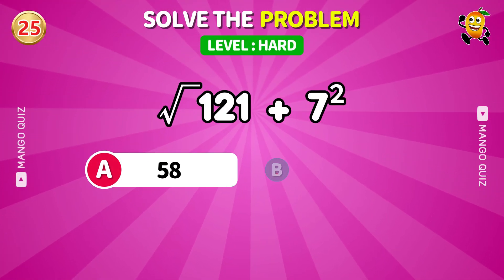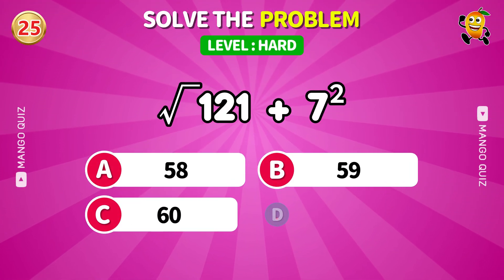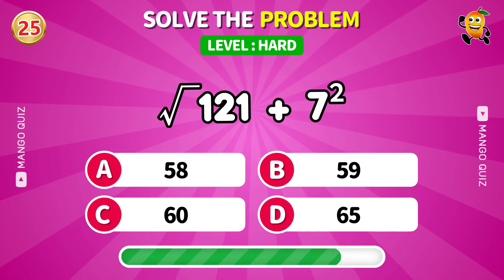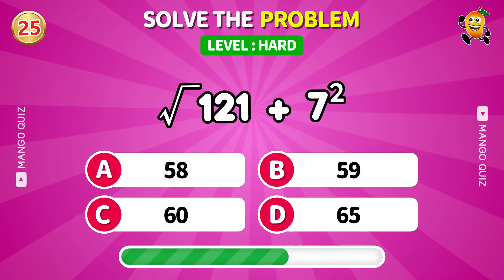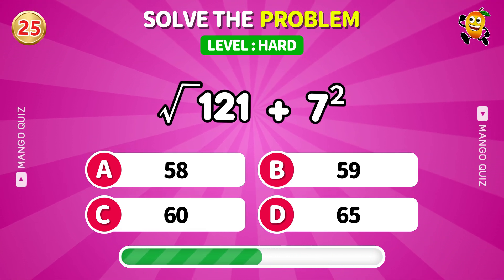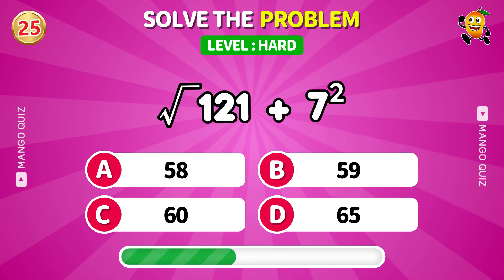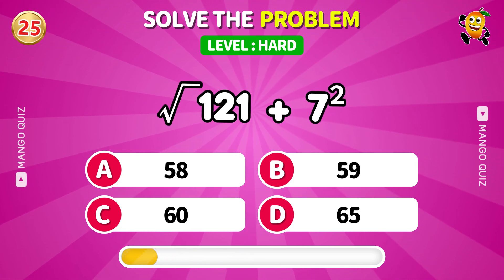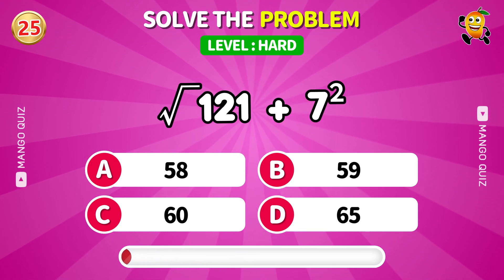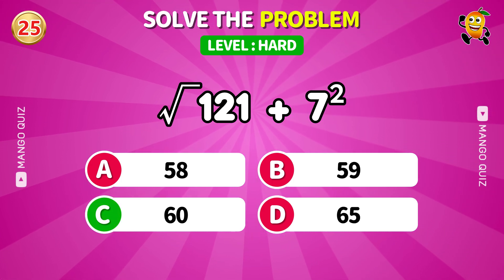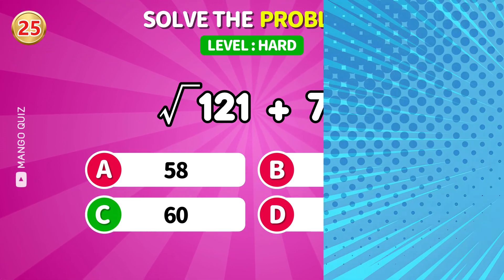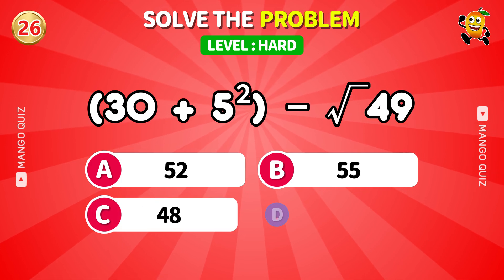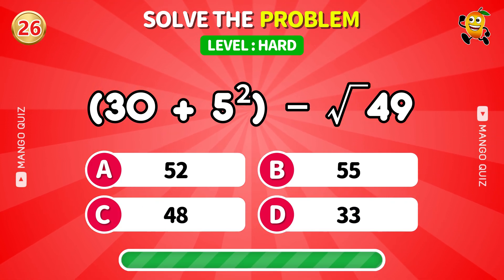Square root of 121 plus 7 squared. Answer: 60. Next: 30 plus 5 squared minus the square root of 49. Answer: 49.